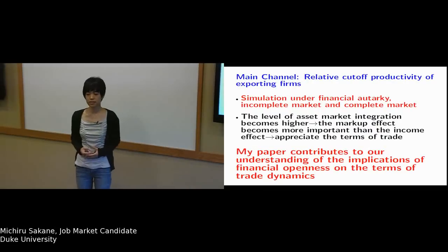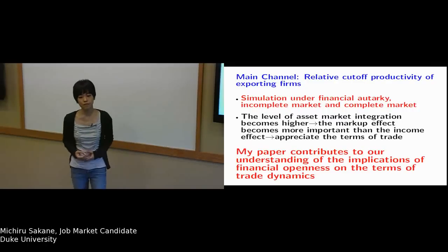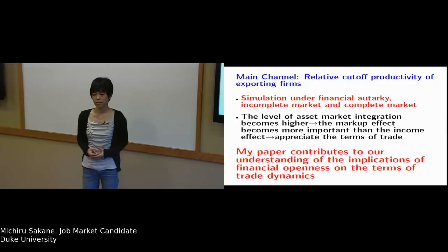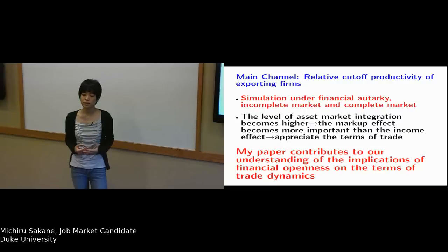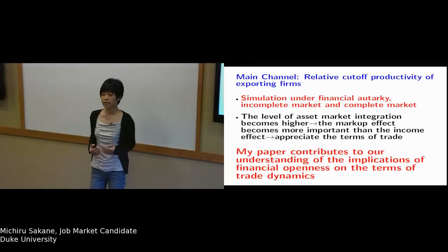In these cases, the markup effect comes into play. If there is an aggregate productivity shock, the production cost in the home economy decreases. It is then easier for firms to enter the home market, so competition in the home market increases and the markup in the home market decreases.